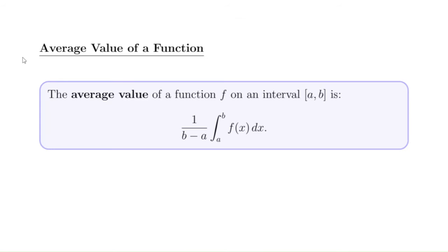Now, what is the average value of a function? The average value of a function f on an interval a to b is defined as 1 over (b minus a) times the definite integral from a to b — in other words, the definite integral divided by the length of the interval, b minus a.